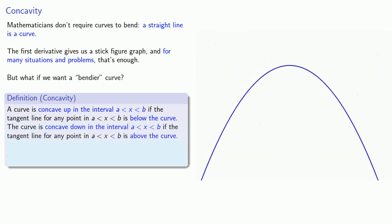Alternatively, the curve is concave down in the interval if the tangent line for any point is above the curve. And finally, it's possible for the curve to change from one concavity to another.